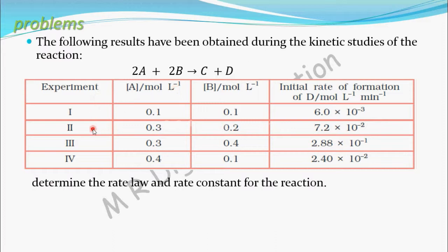These are the experiment numbers: one, two, three, and four. These are the concentrations of reactant A, these are concentrations of reactant B, and these are the initial rates of formation of product D. The rate of formation of D is equal to the rate of the reaction. In experiment one, concentration of A is 0.1, B is 0.1, and the initial rate is 6.0 × 10⁻³.